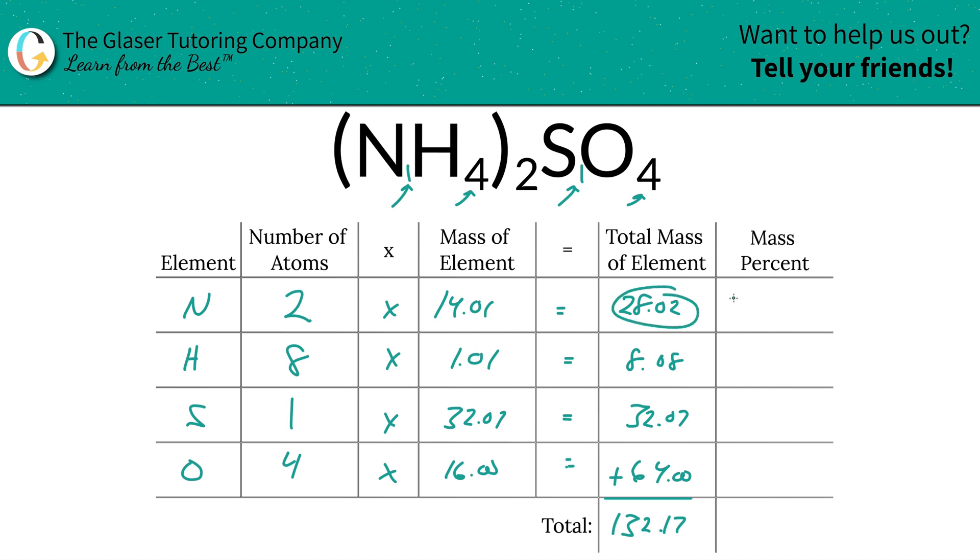To now find the mass percents, we're simply going to take the total mass of that particular element we want to find the percent of. So let's say for nitrogen, we're going to take the 28.02, and then we're going to simply divide it by the entire mass of the compound—that's why we had to do that first—132.17, and then just multiply that by 100 to get it in percentage terms. This is a simple percent: part over whole times 100. When we calculate that, we're going to get a value here roughly 21.20 percent. That's the percentage of nitrogen by mass in the compound.